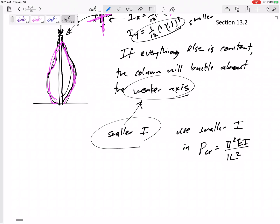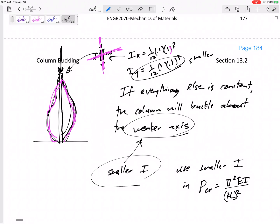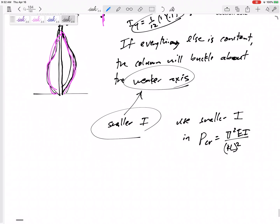So it's going to buckle about the weaker axis, unless you brace the weaker axis, or unless the weaker axis is constrained differently. So anyway, use the smaller of the area moments of inertia, I in the pi squared EI over KL squared. And right now, K is one, it's almost like it's not there.